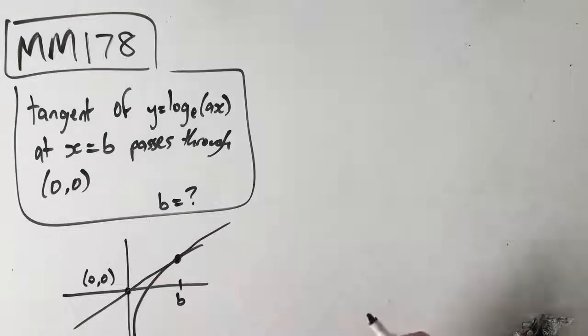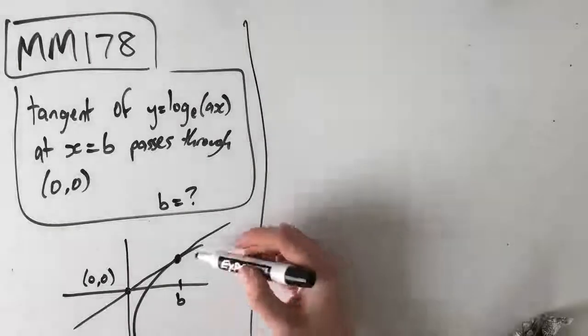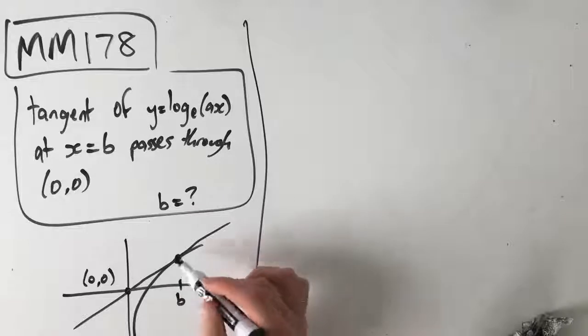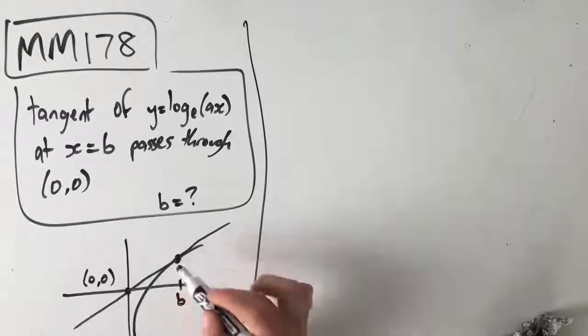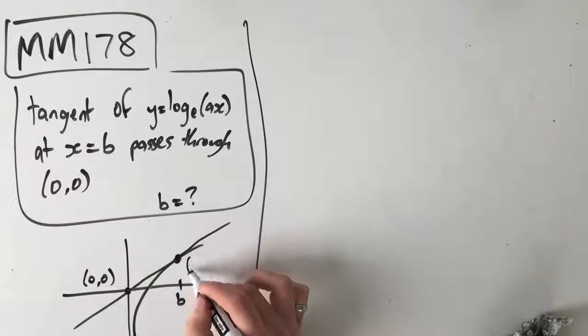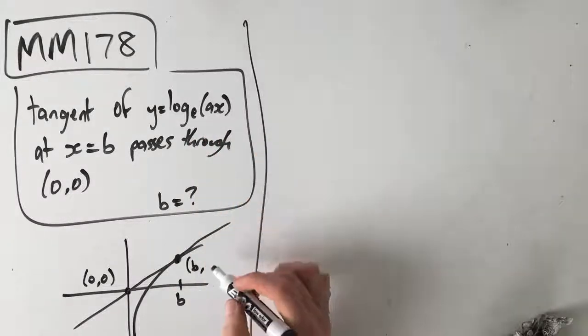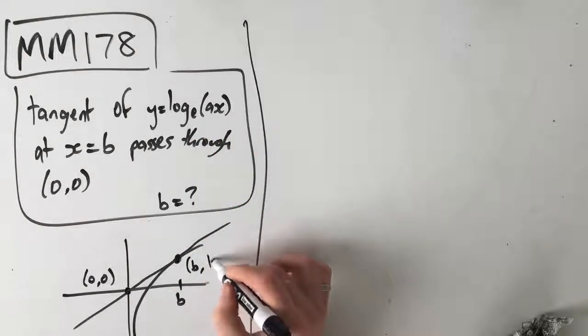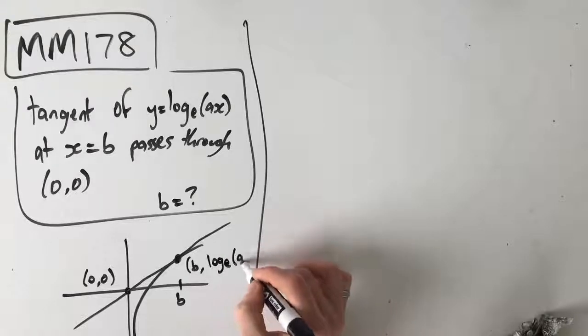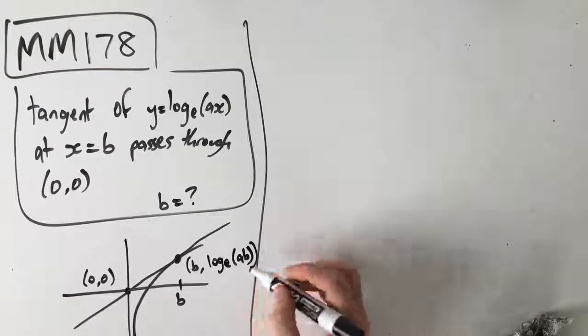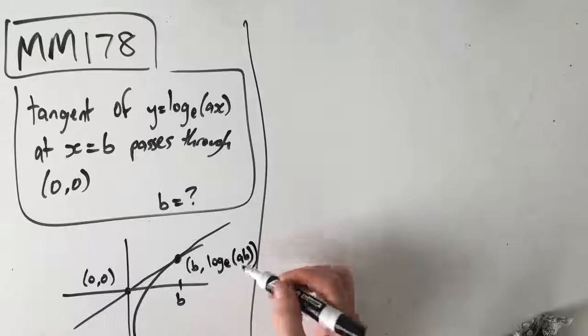First things first, we need to figure out the gradient of the tangent at this point. We know that it passes through these two points, where this point is b, and our equation is log_e(ax), which means that our y value here is log_e(ab). Our b is our x value, so we sub that in there.